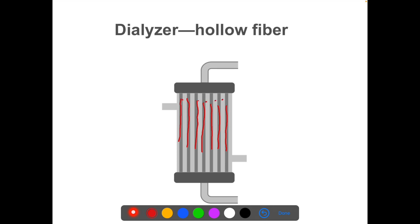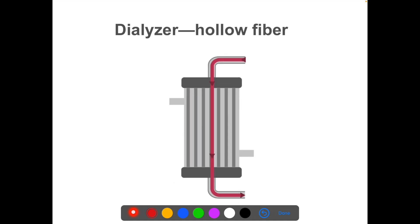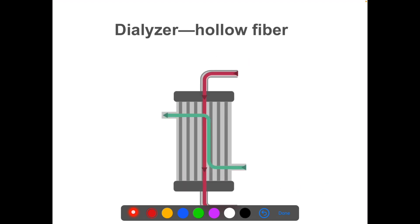Basically the dialyser has hollow fibers and there are 4 ports. Port 1, port 2, port 3, and port 4. Port 1 is the entry of blood from the patient into the dialyser, which passes through and comes out at port 2 — back to the patient. Port 3 and port 4 are the dialysate inflow and outflow. One is the inlet of dialysate fluid and the other is the outlet of dialysate fluid.